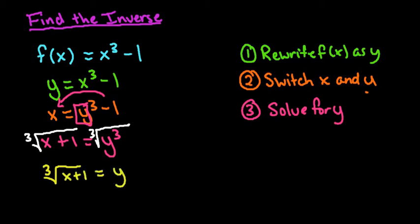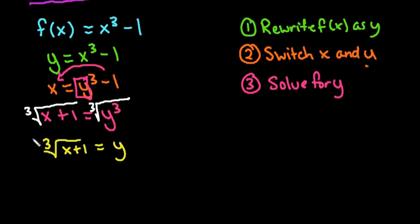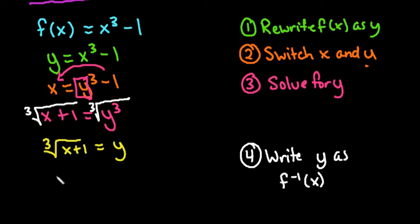And then our last step, remember because this is the inverse of it, we do want to rewrite it back in inverse notation. So we're going to write y as the inverse of x. So instead of writing y equals, we would do f negative one of x, which really means just the inverse of our f function is equal to the cube root of x plus one.